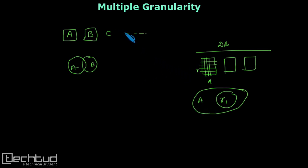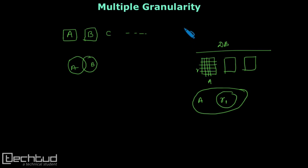Granularity means different levels of data, where smaller levels are nested inside higher levels. Inside a database you have tables, inside a table you have multiple records, and inside a record you have multiple values. There are different levels of data, which is called granularity of data. We want to use this granularity to ensure concurrency, and we believe efficiency can be improved.